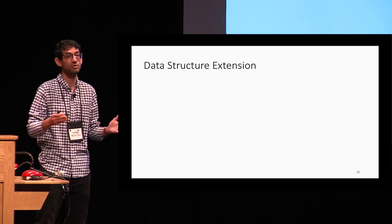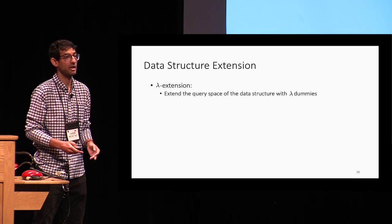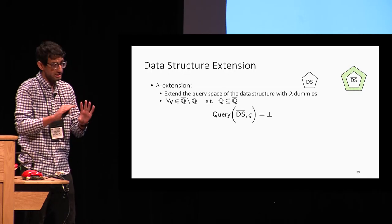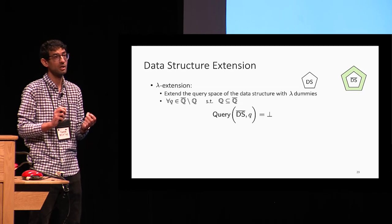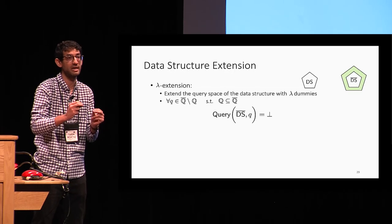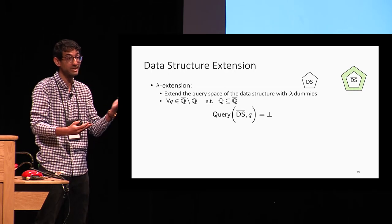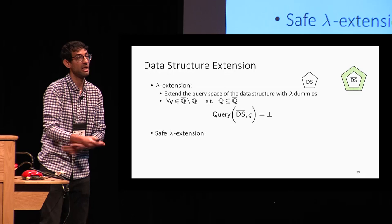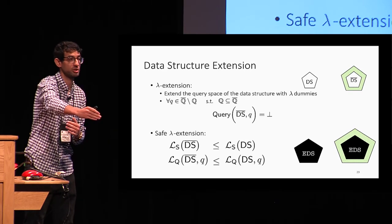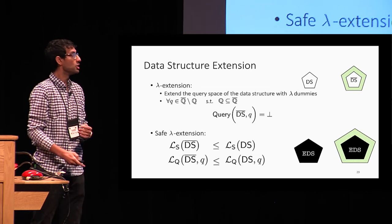By extension, we mean adding dummy elements to the query space of the original data structure — a lambda extension adds lambda dummies such that querying with a dummy always returns nothing. While this seems straightforward, it must be handled with care, because if we are not careful the leakage profile might help the adversary distinguish between real and dummy elements. So we introduce the notion of safety extension: the setup leakage of the extended data structure leaks at most the setup leakage of the original, and the query leakage of the extended structure leaks at most the query leakage of the original.